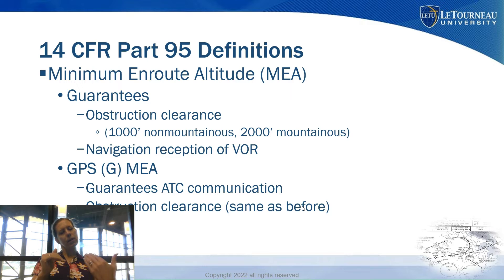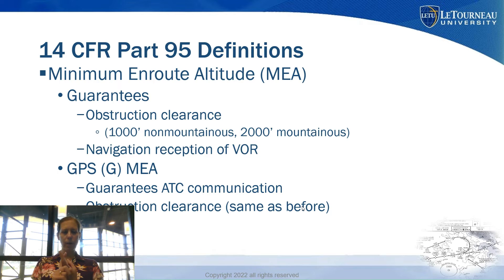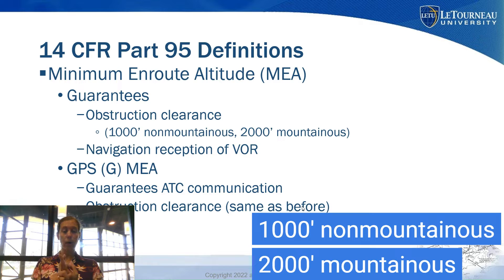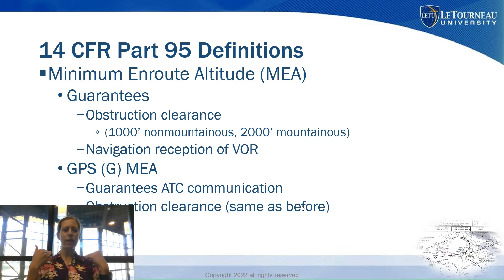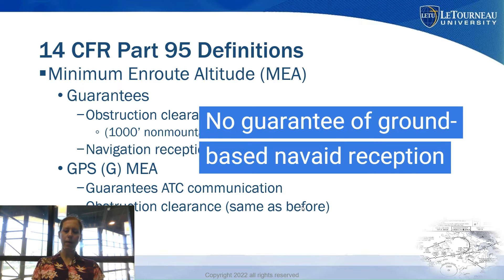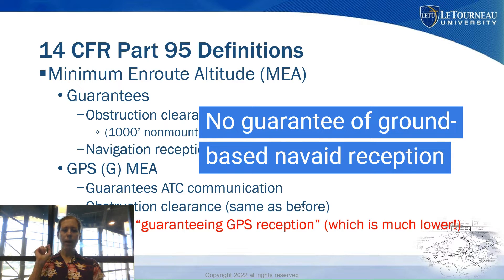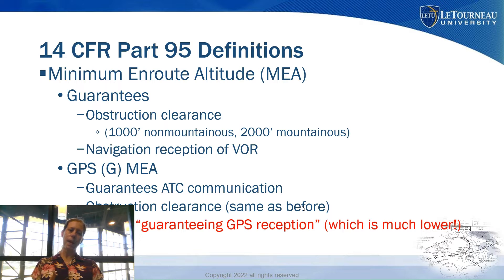There's another kind of MEA called the GPS MEA. The GPS MEA provides obstacle clearance just as mentioned before, and it also guarantees the ability to communicate with ATC — which is helpful. However, it does not guarantee the ability to receive ground-based nav aids that make up the airway. It is also not about guaranteeing GPS reception — GPS reception works at much lower altitudes, as evidenced by GPS approaches to many airports.